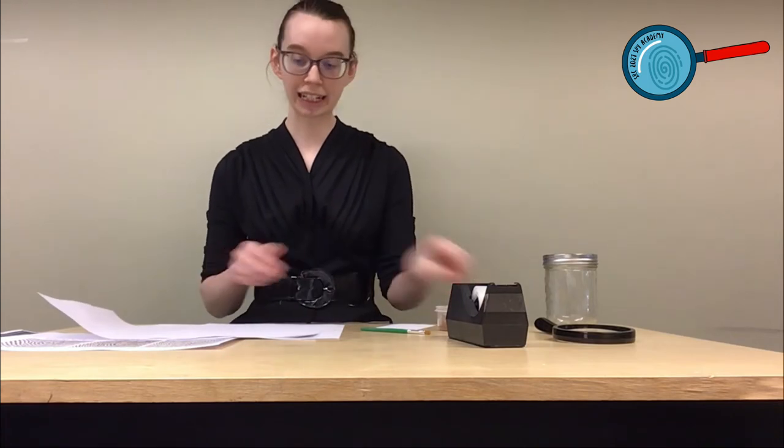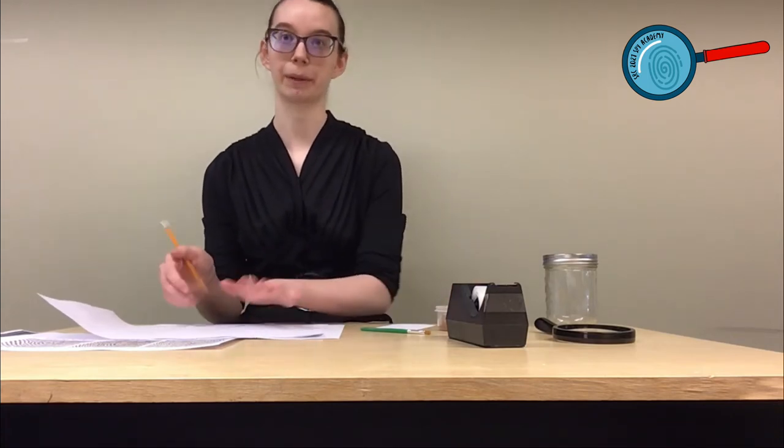First, you're going to trace each of your hands onto a piece of paper. We're going to do both hands because fingerprints from different hands and fingers aren't always the same, even if they belong to the same person. Be sure that you label which hand is which and which finger is which. In order to have a full fingerprint database to examine prints from, you'll need fingerprints from all ten fingers of each person you wish to examine.